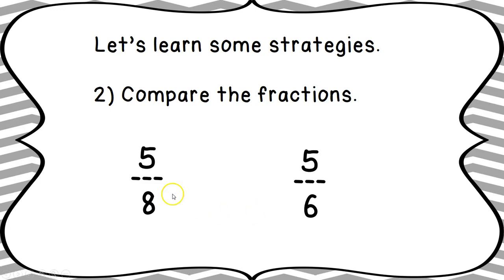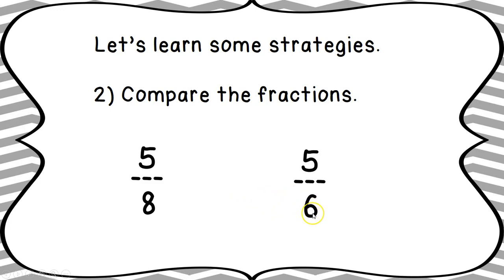In this example I've got five-eighths and five-sixths. The denominators — eight and six — are not the same, but both numerators are fives. When your denominators are different but your numerators are the same, look for the fraction with the smallest denominator, because that means it's cut into fewer pieces, making each piece larger. This one has eight pieces and this one has six, so the six-piece fraction has bigger pieces. Therefore, five-eighths is less than five-sixths.